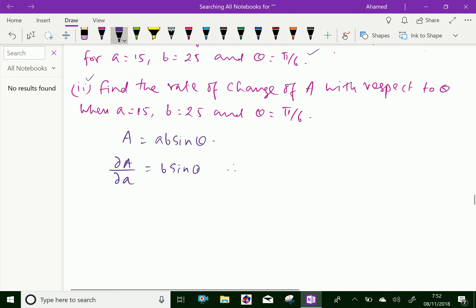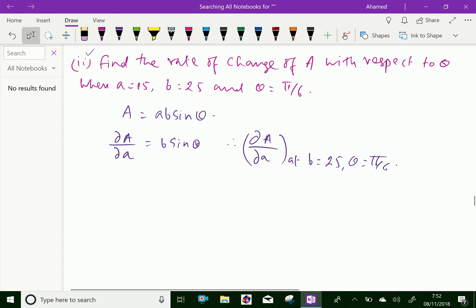we can say ∂A/∂a at b = 25 and θ = π/6, which is equal to 25 × sin(π/6).